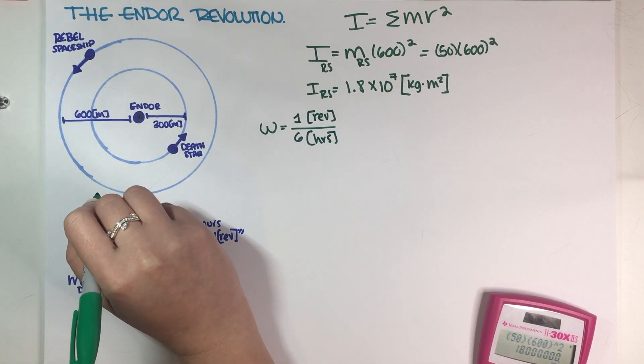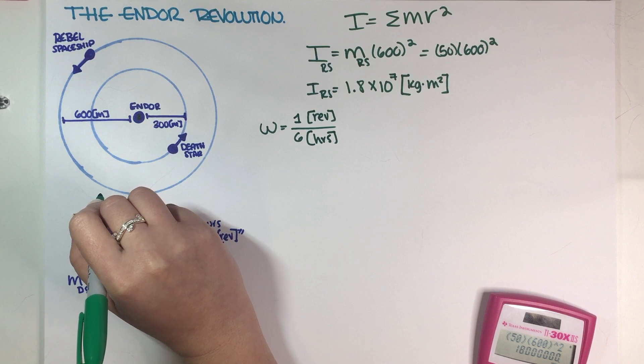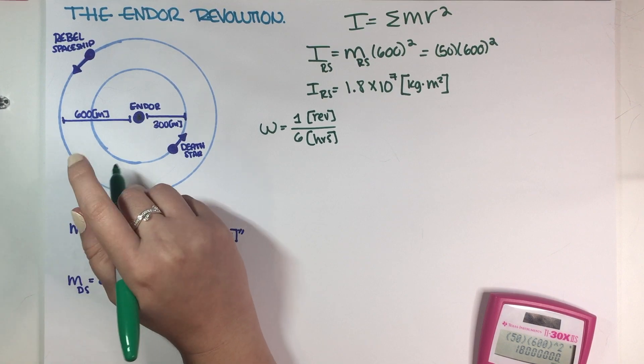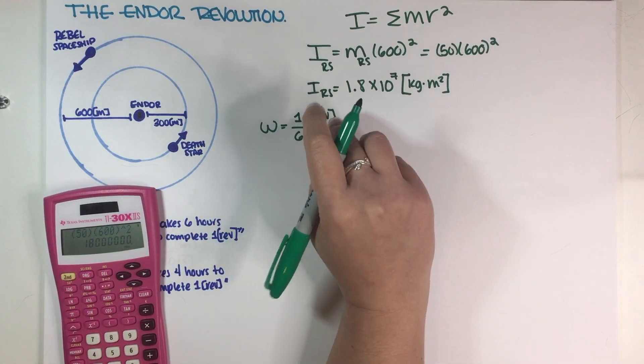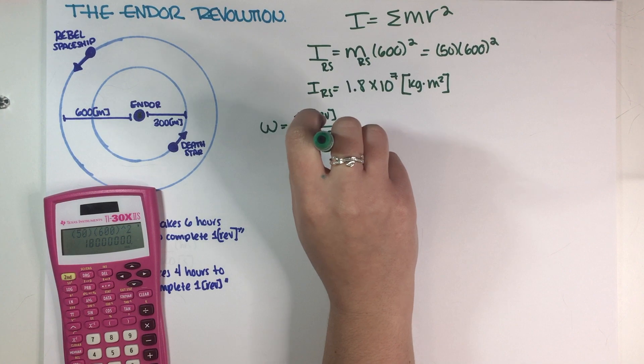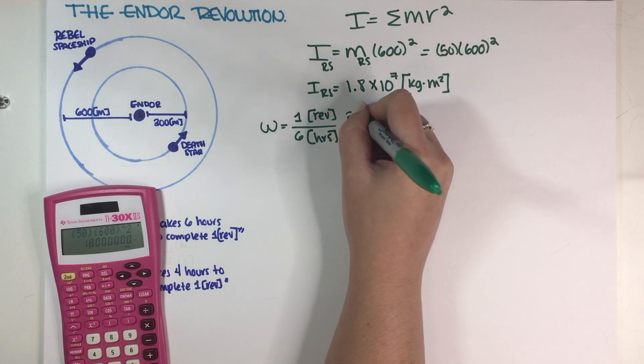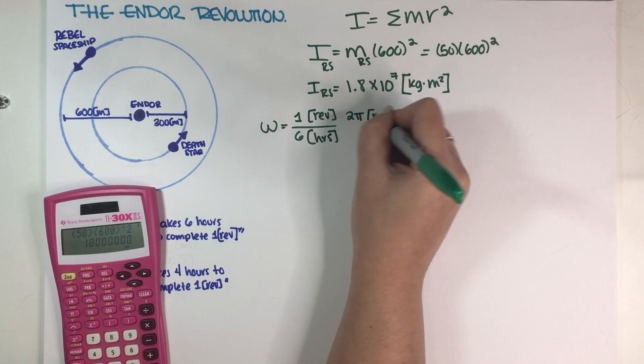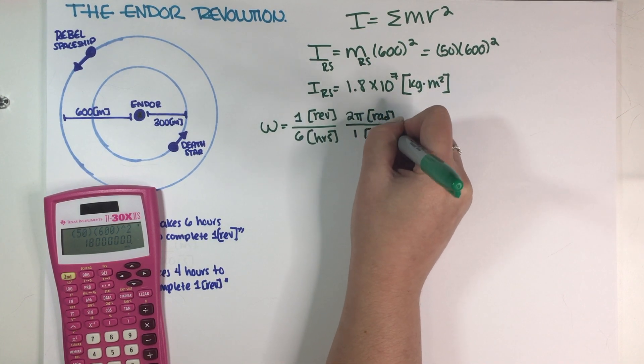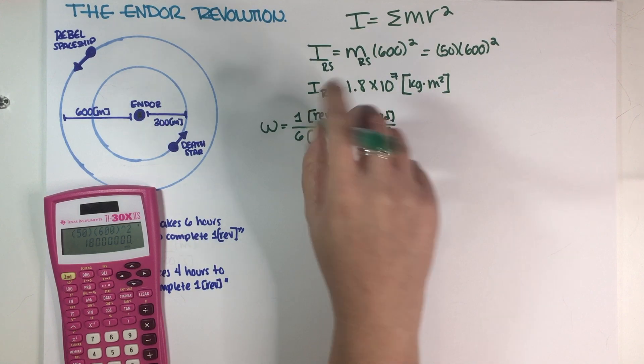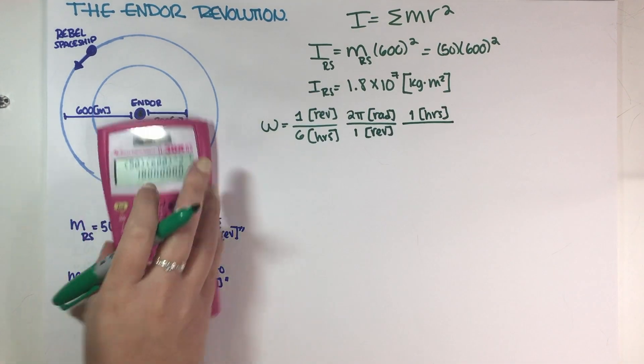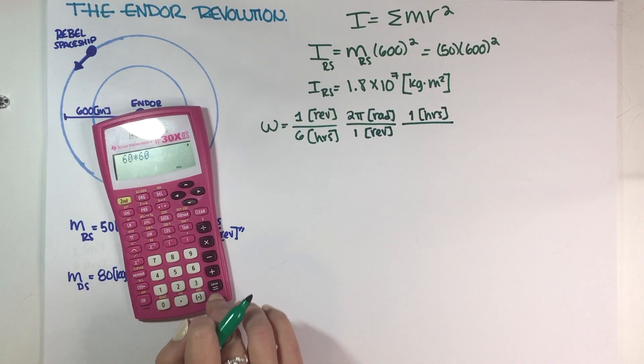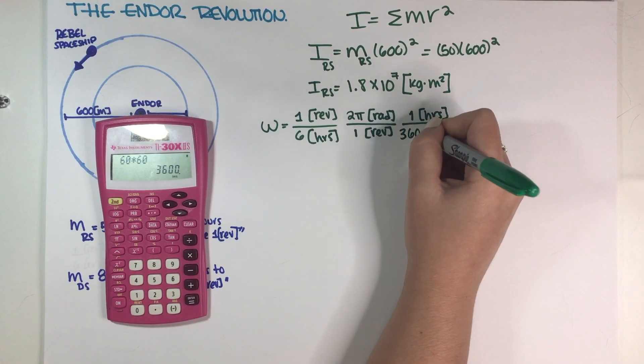Even though the problem is not specifying our units, we should be changing this into radians per second because those are the SI units. Let's go ahead and make that conversion. So I have one revolution in six hours. First, I want radians. There are 2π radians in one revolution. I also have hours and I want seconds. One hour has 60 seconds times 60 minutes, 3600 seconds.